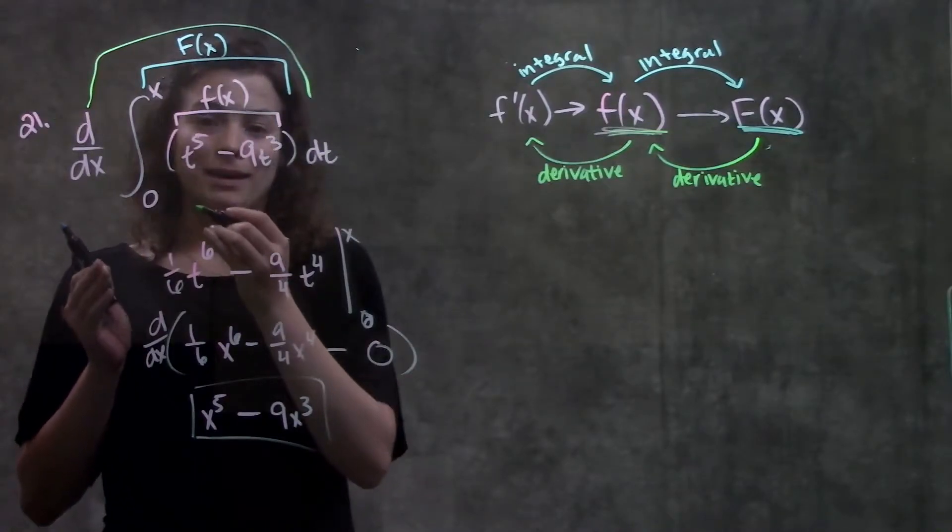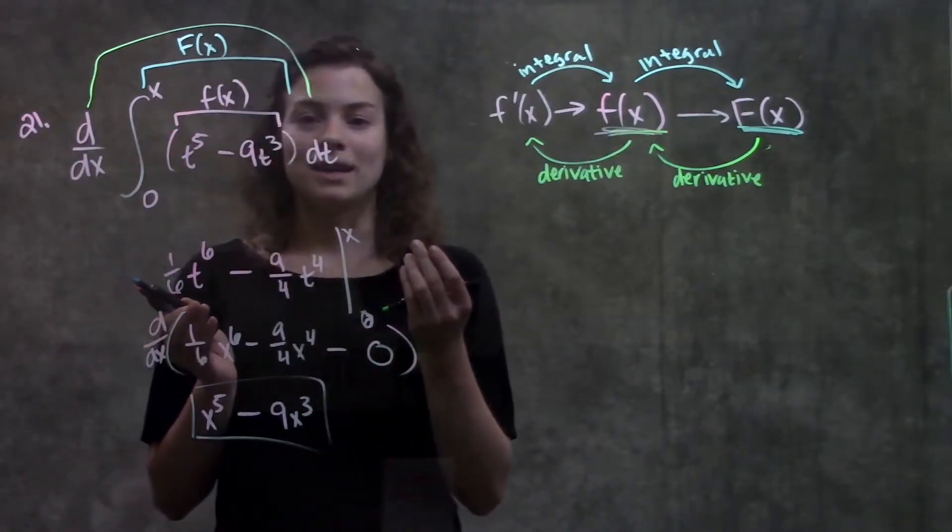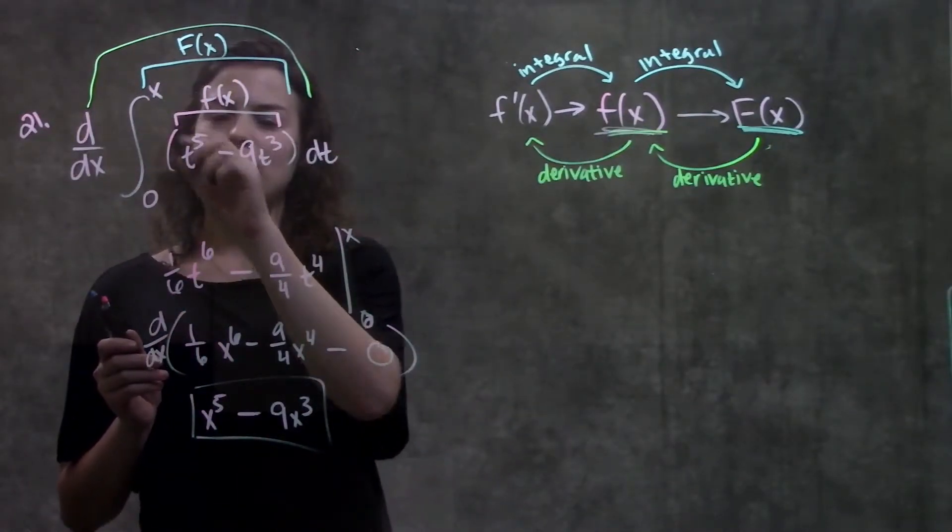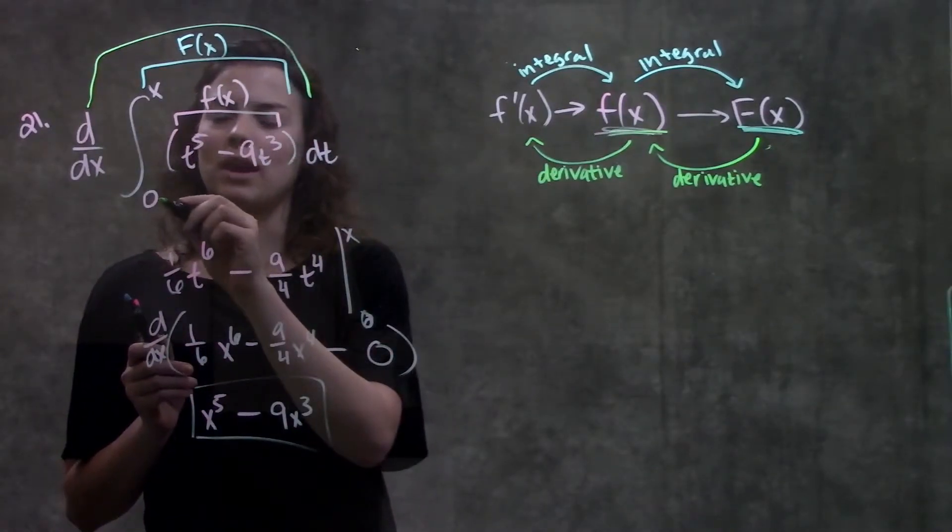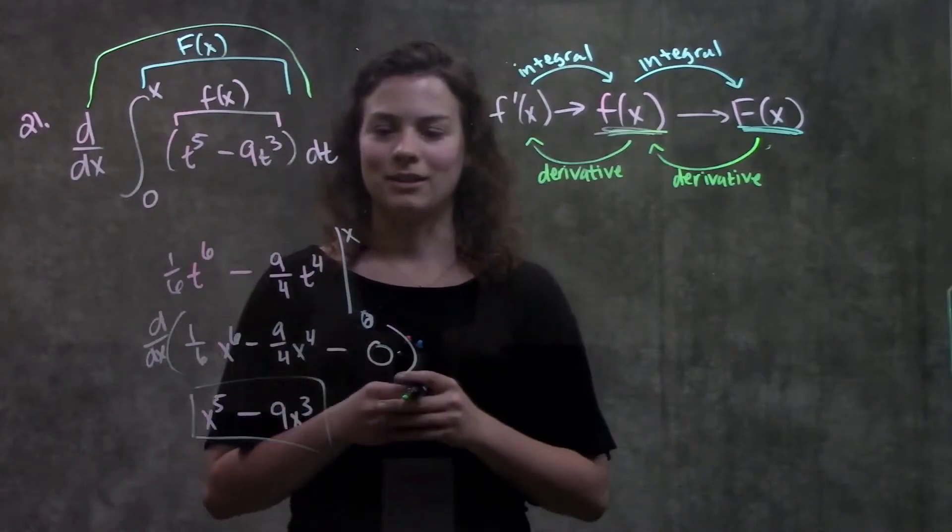So basically these things kind of cancel each other out. A quick way to think of this is you just plug in your top number into whatever function you have here, and subtract whatever you get when you plug in this bottom number into your function.